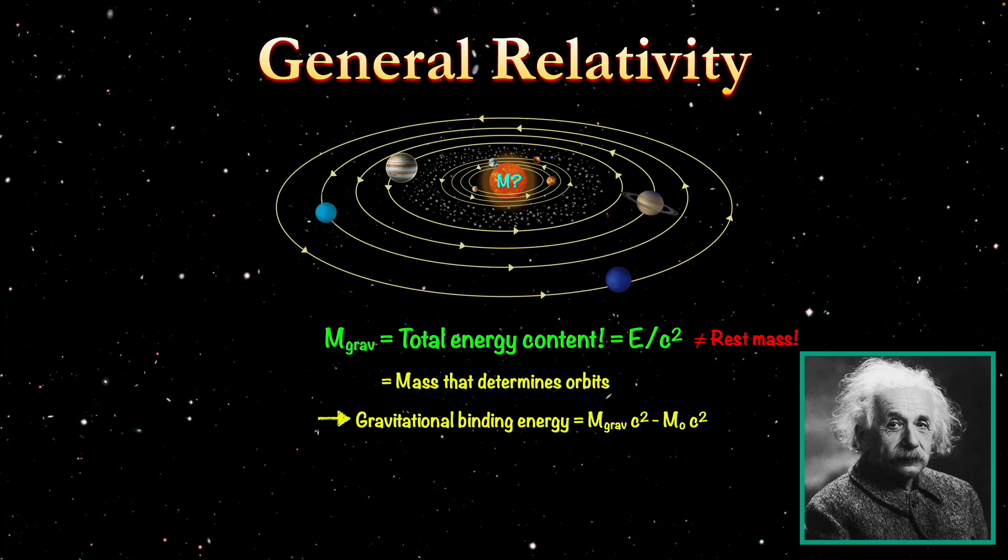Any form of energy contributes to the curvature of space-time. So when we're adding up all of the energy of the sun to get its gravitational mass, we include the rest mass, we include energy stored in photons in the sun, we include energy coming from rotation, we include thermal energy, and we include nuclear binding energy, which turns out is negative. But what's important is that all forms of energy have to be included in order to get the gravitational mass.